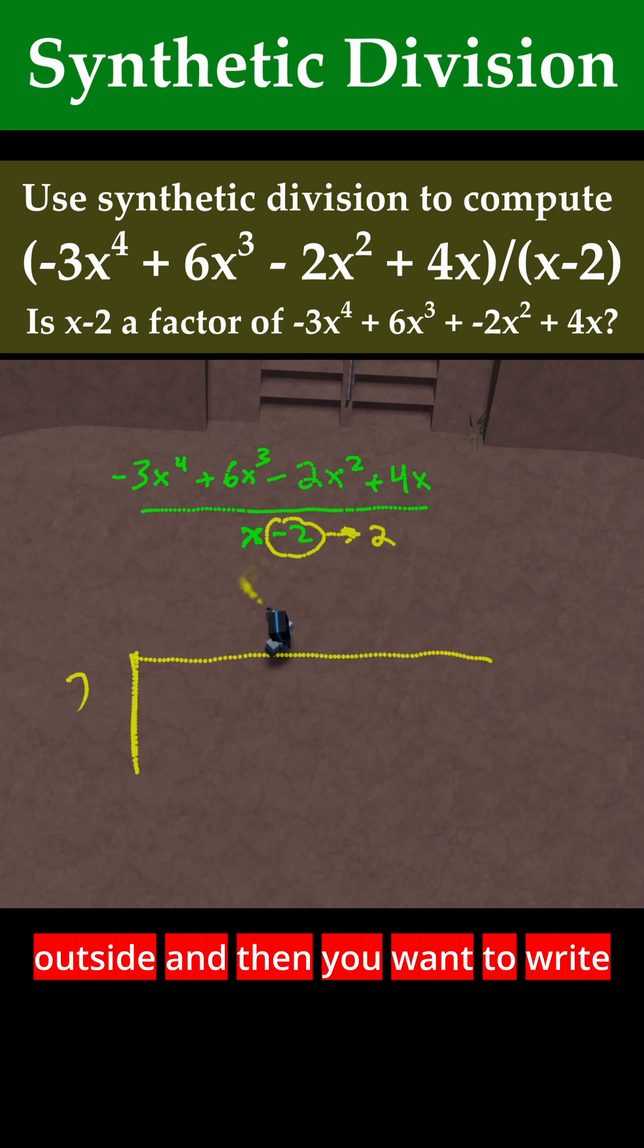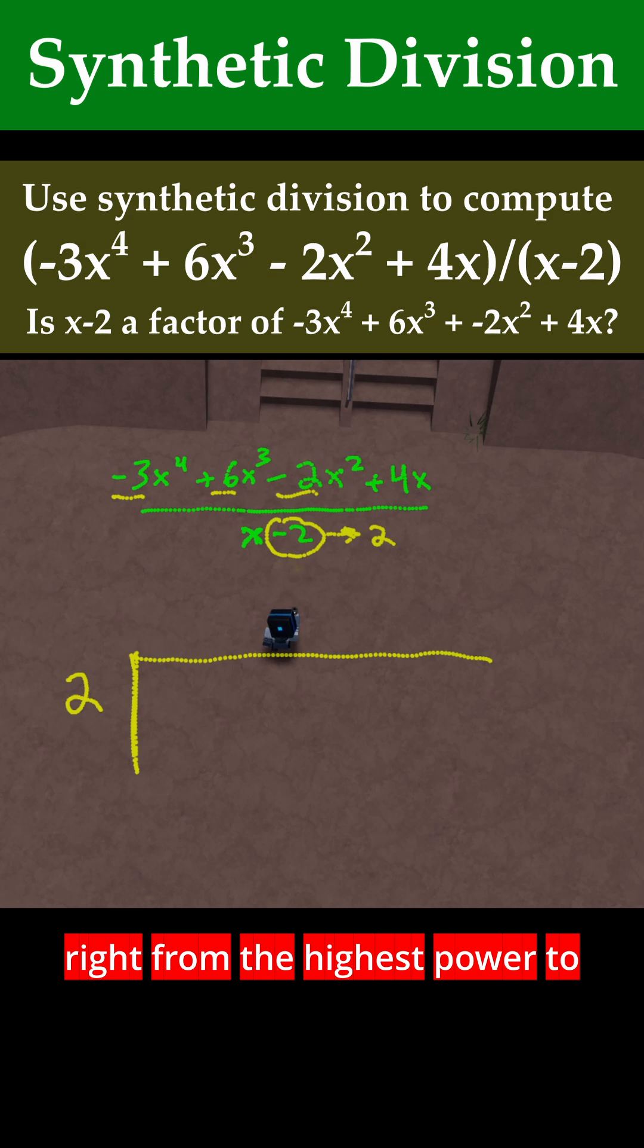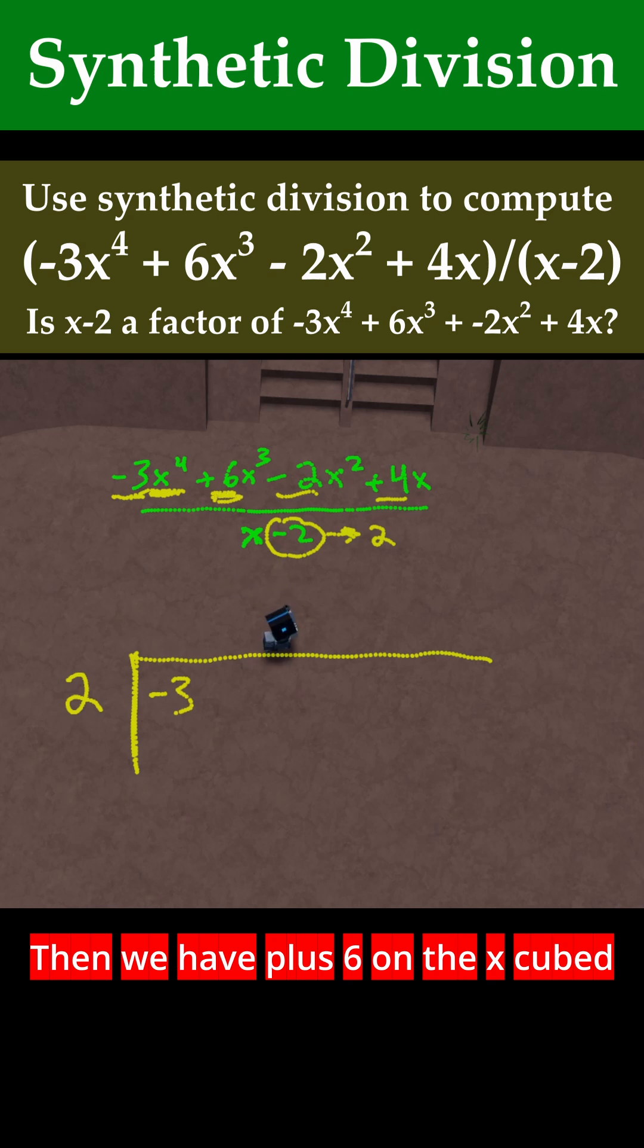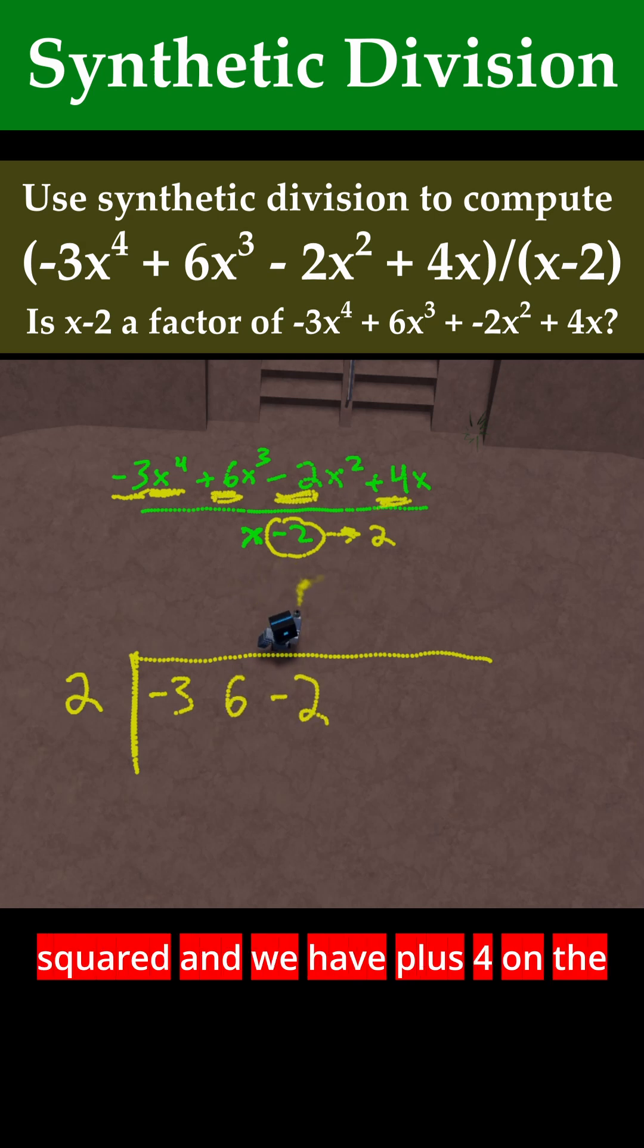I'm going to have a 2 on the outside, and then you want to write the coefficients of all the terms in the numerator from left to right, from the highest power to the lowest power. So the highest power is x^4 with coefficient -3, then +6 on the x^3, -2 on the x^2, and +4 on the x.